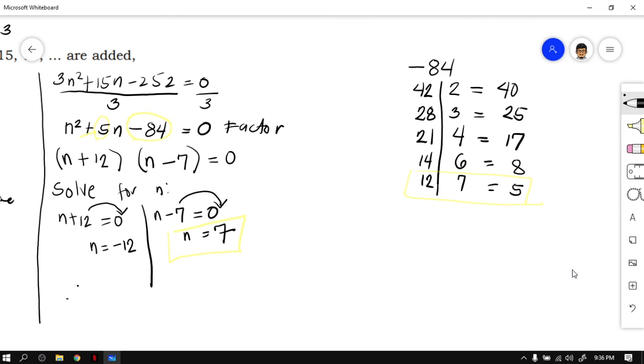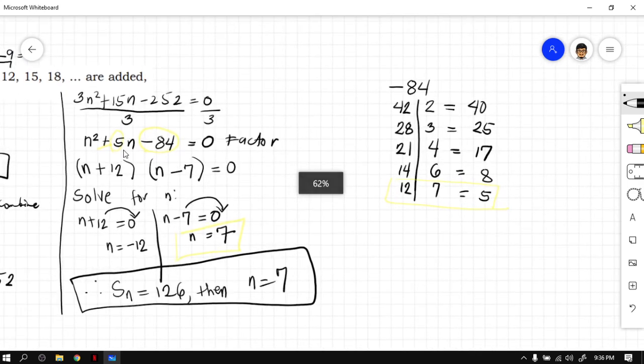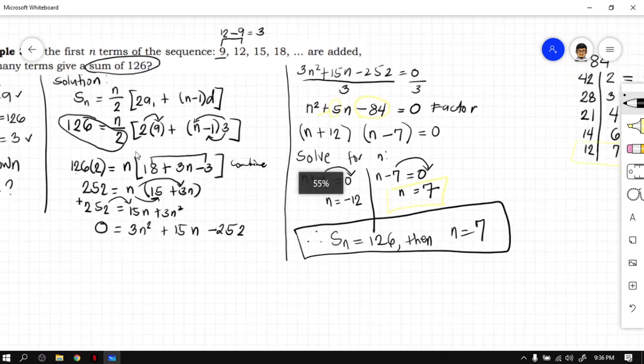Therefore, if the sum of the sequences is 126, then n is equal to 7. Now we're done. So that is example number 3.